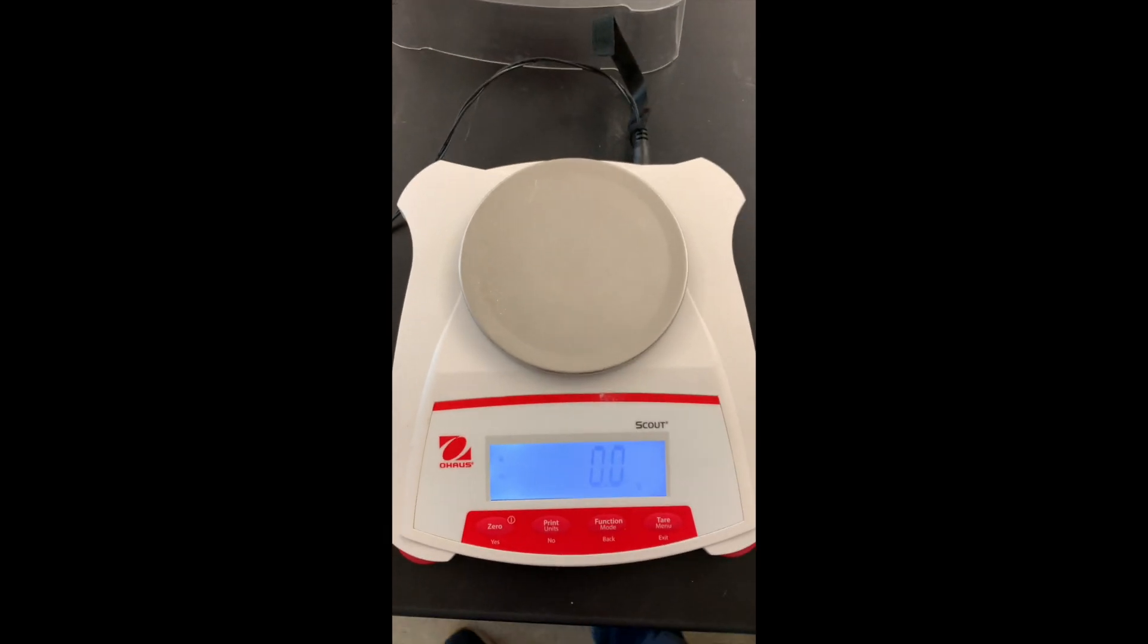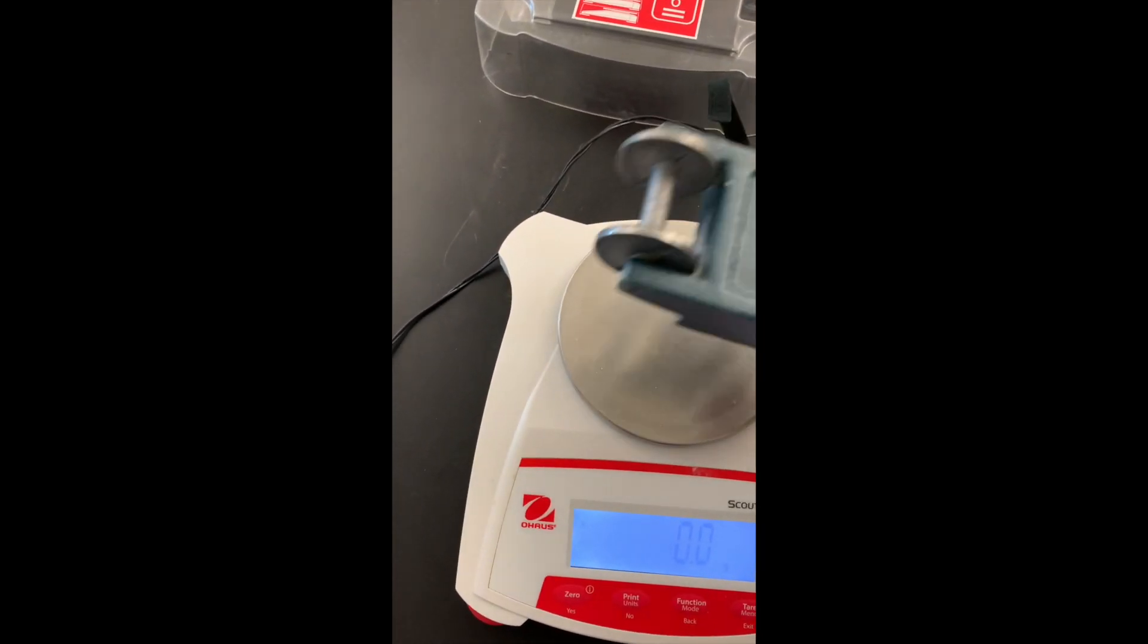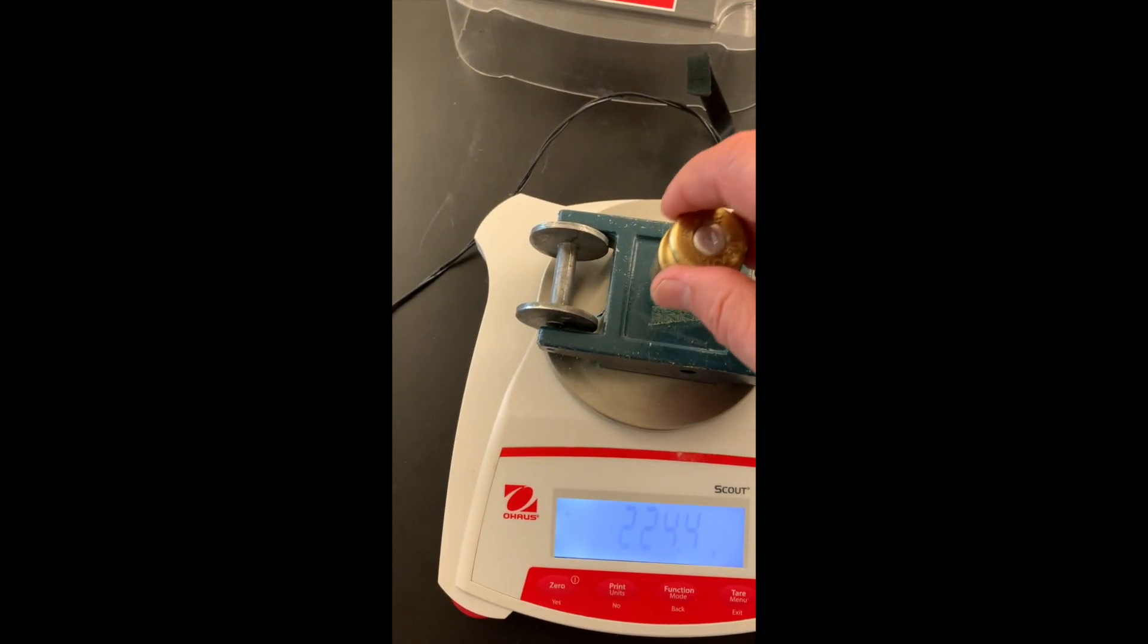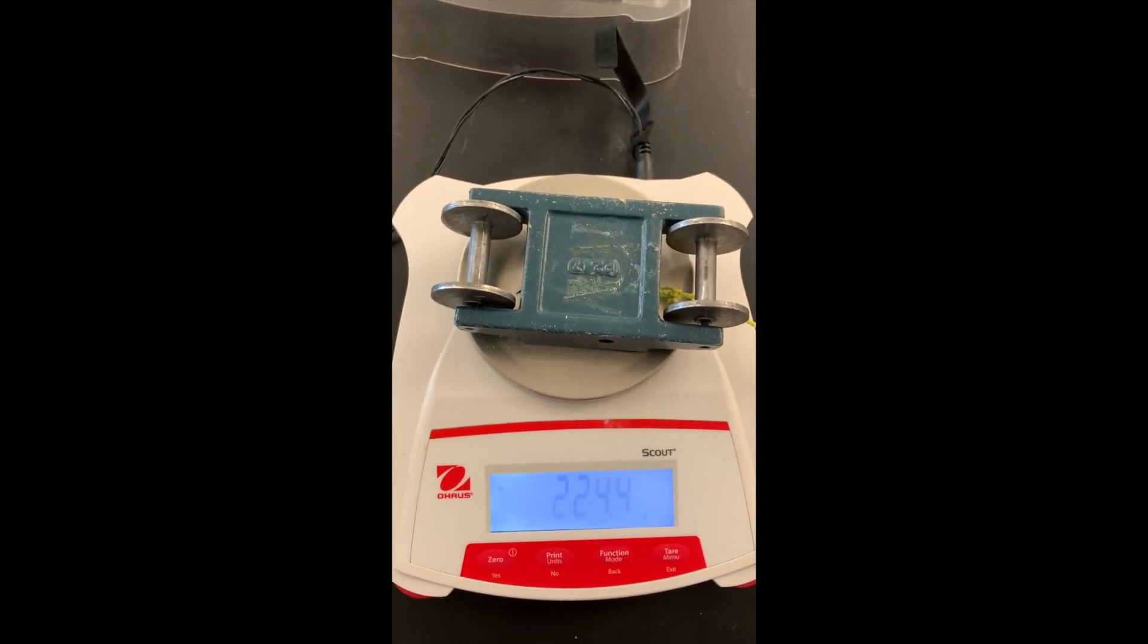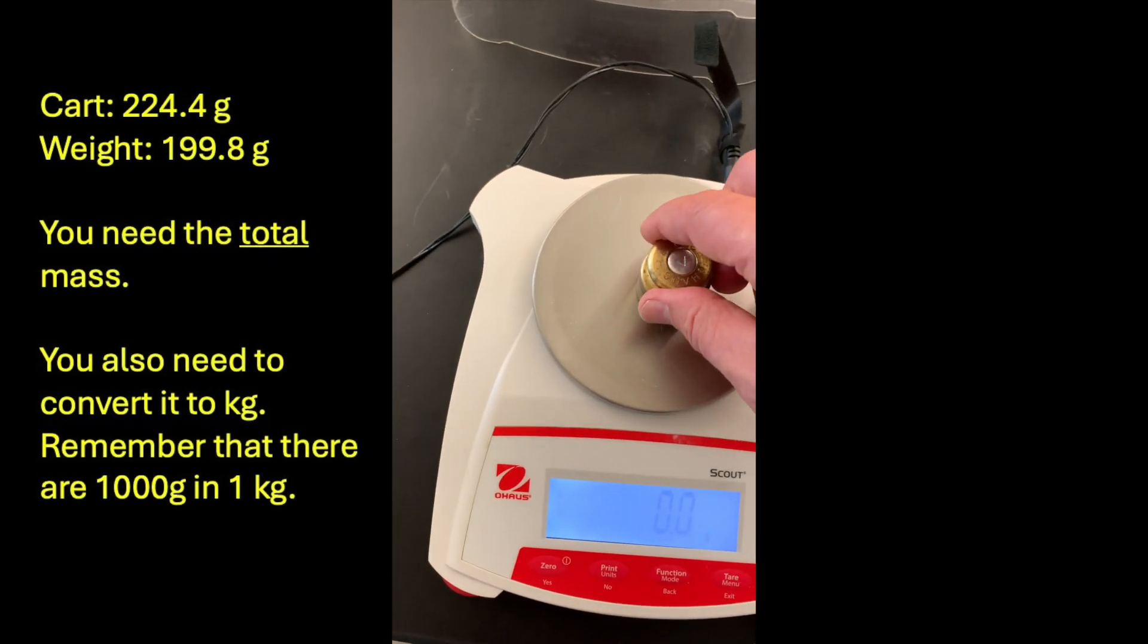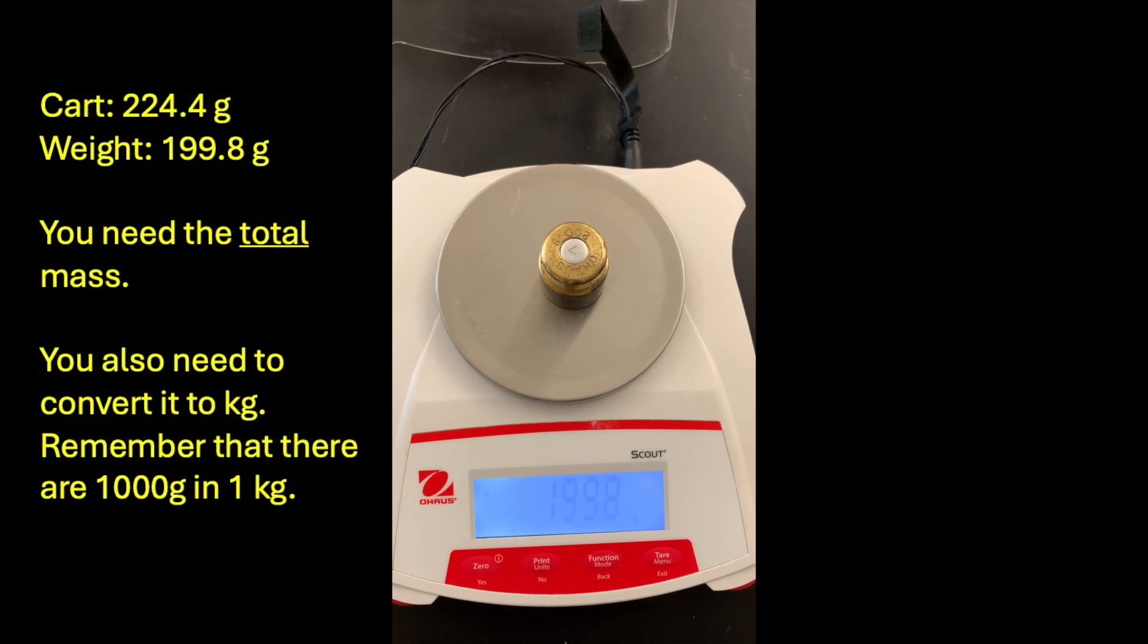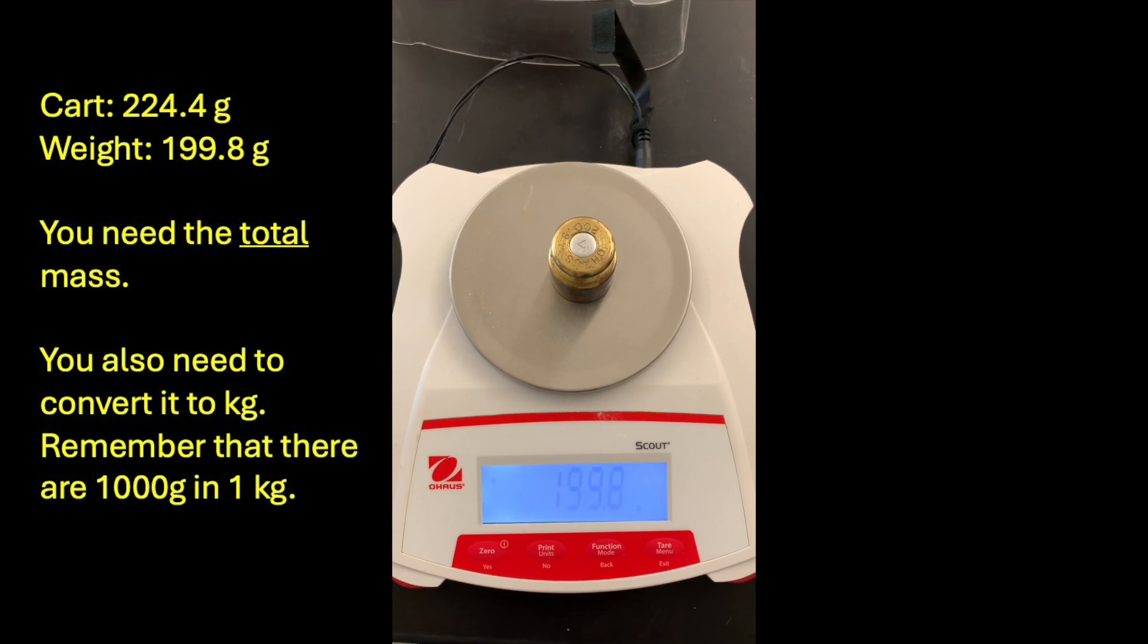Alright, the first thing we're going to do is weigh the cart that we're going to use in this lab along with the weight that goes on it. The cart weighs 224.4 grams. The weight that we're going to put in the cart weighs 199.8 grams. If we add the two together, we get the total weight of the cart.